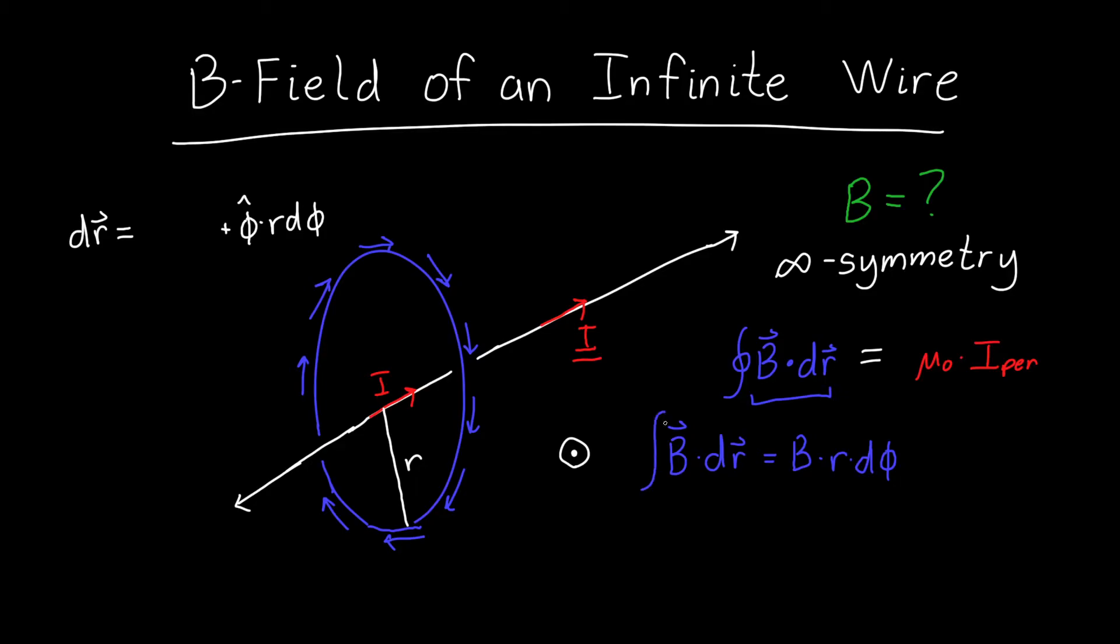So now if we integrate both sides, we integrate B·dr. Because of symmetry, B has the same magnitude at every point around our circle. And r has also the same value because we're integrating over a circle. So we can pull both of those constants out of the integral. We're left integrating d phi over a range of 0 to 2 pi. And so this is just equal to B times 2 pi r.